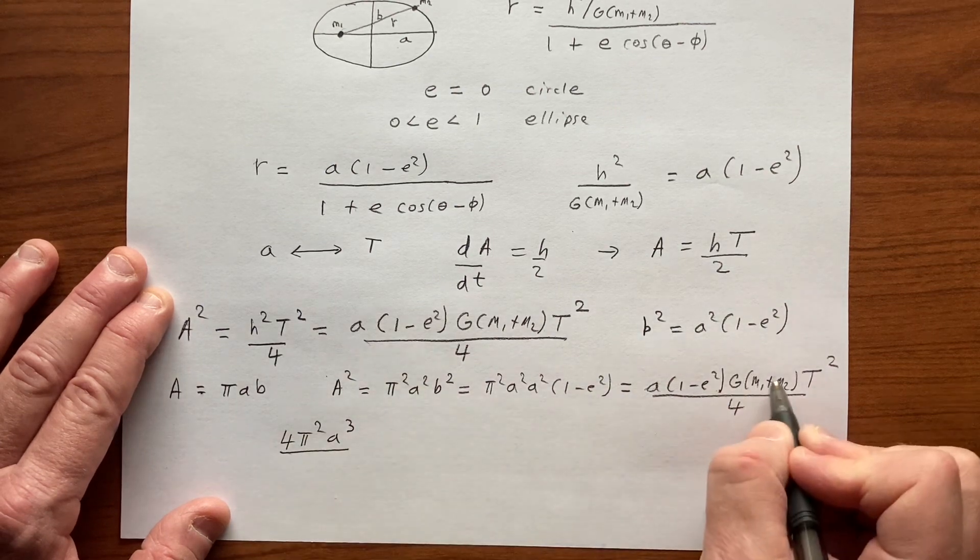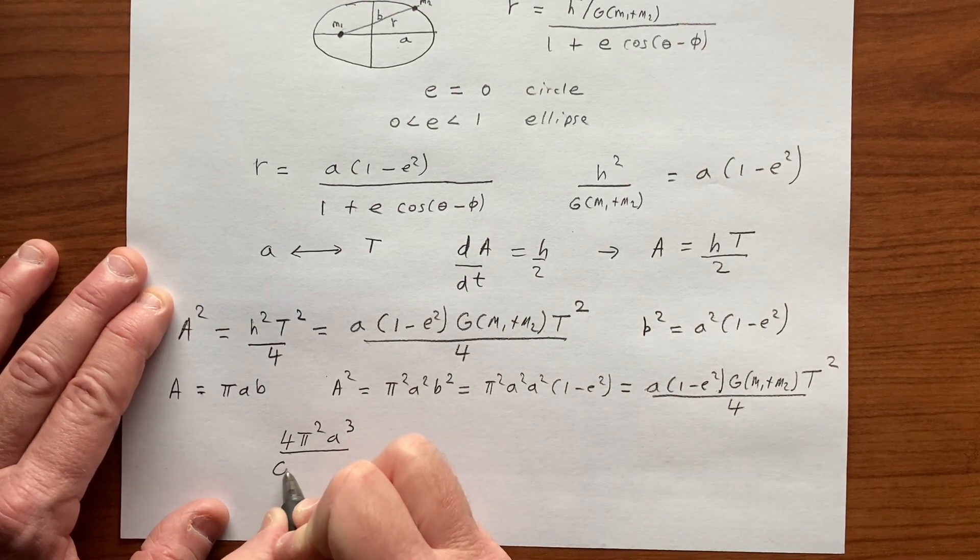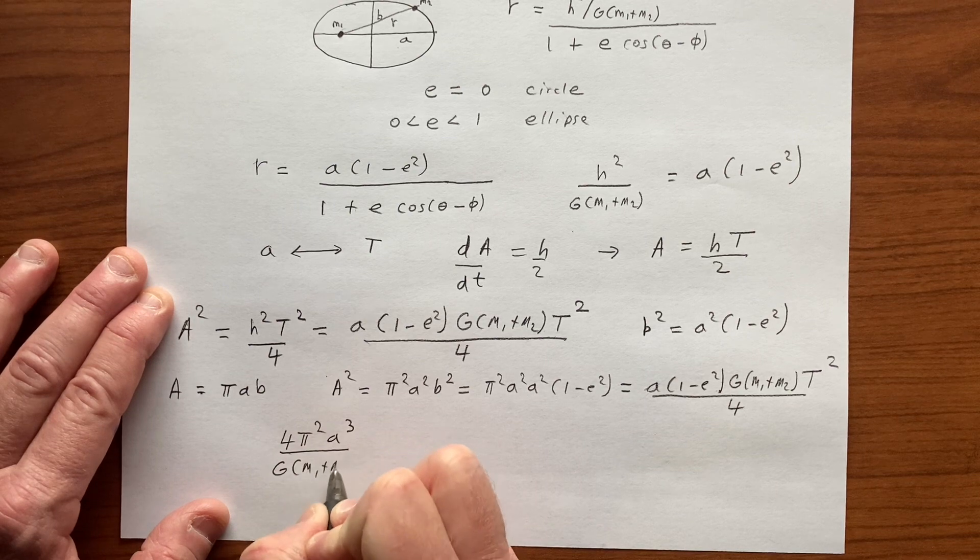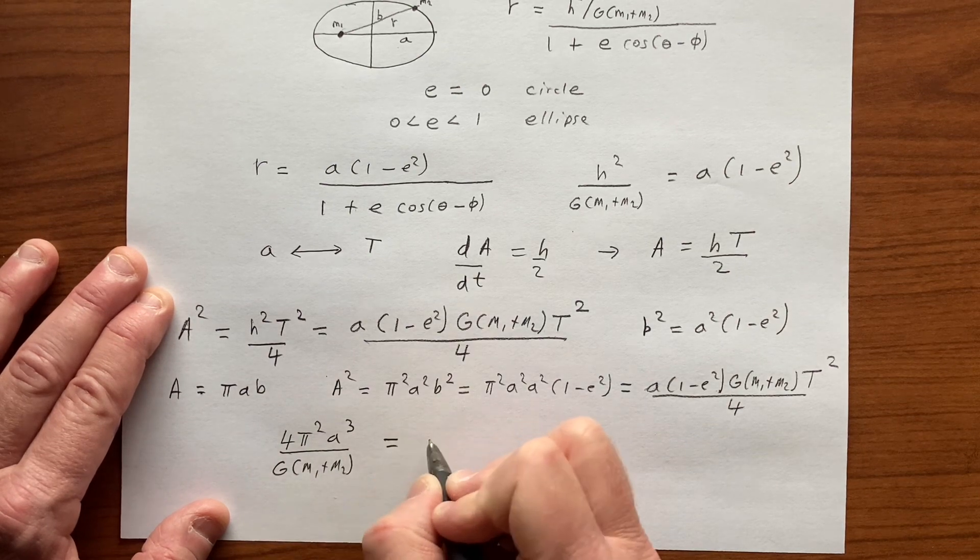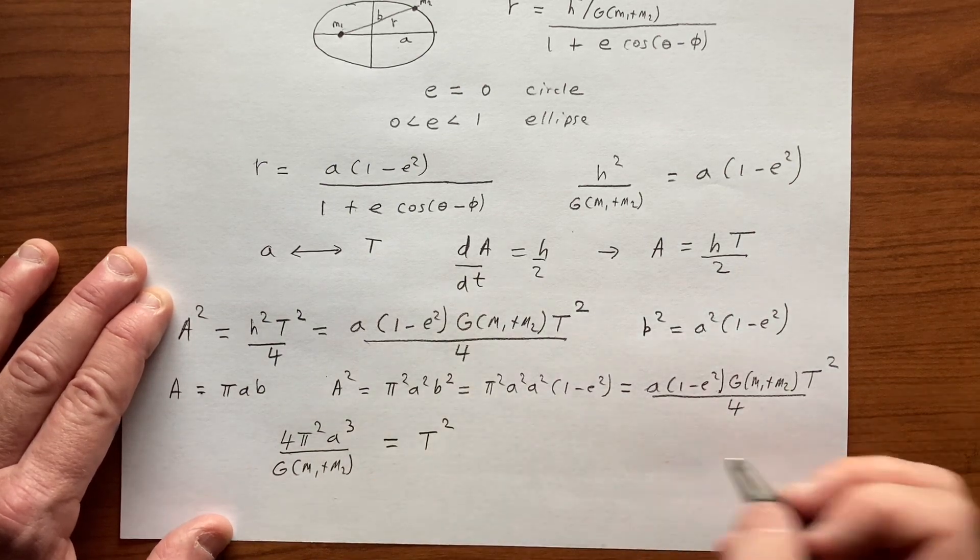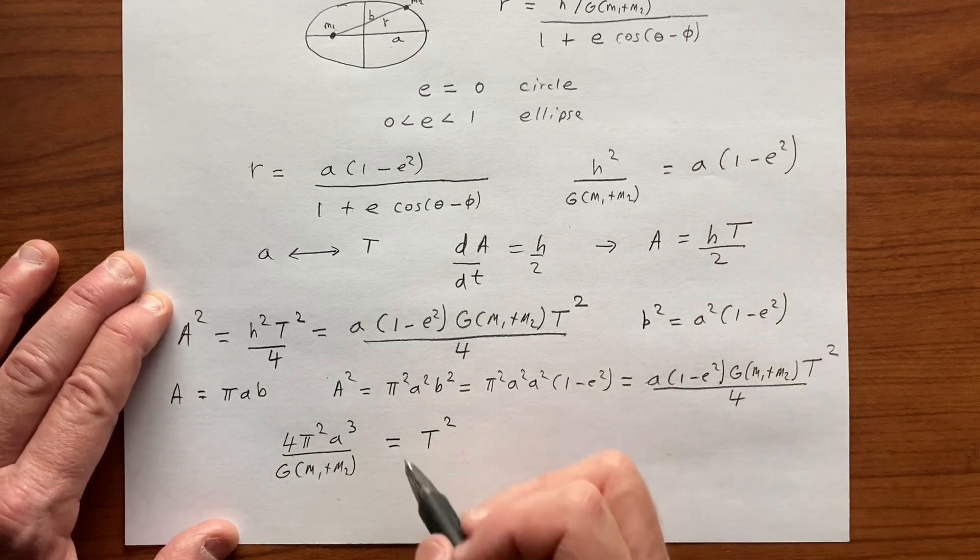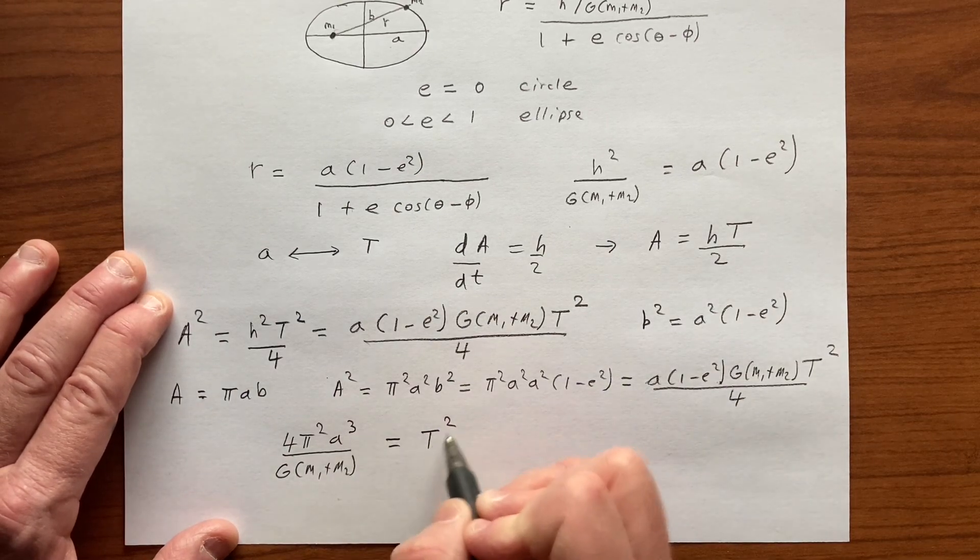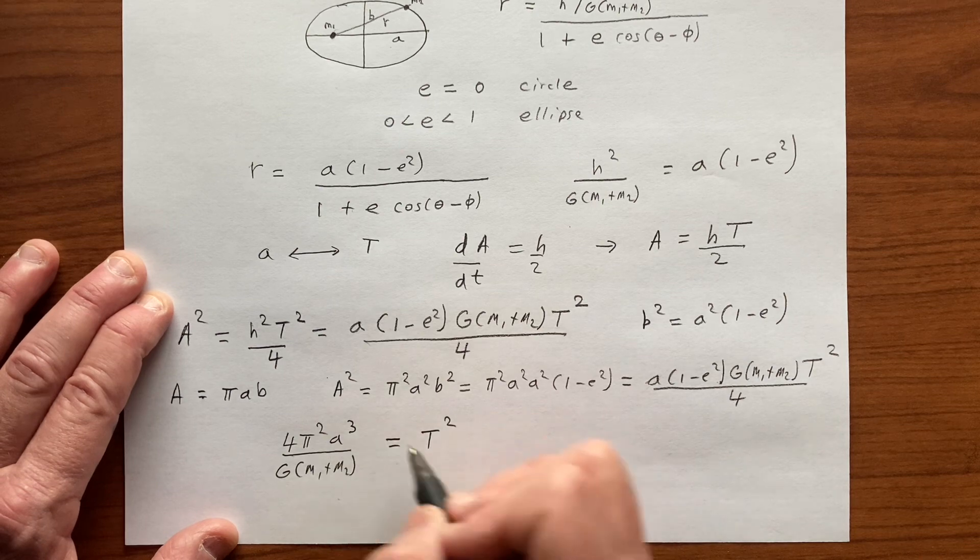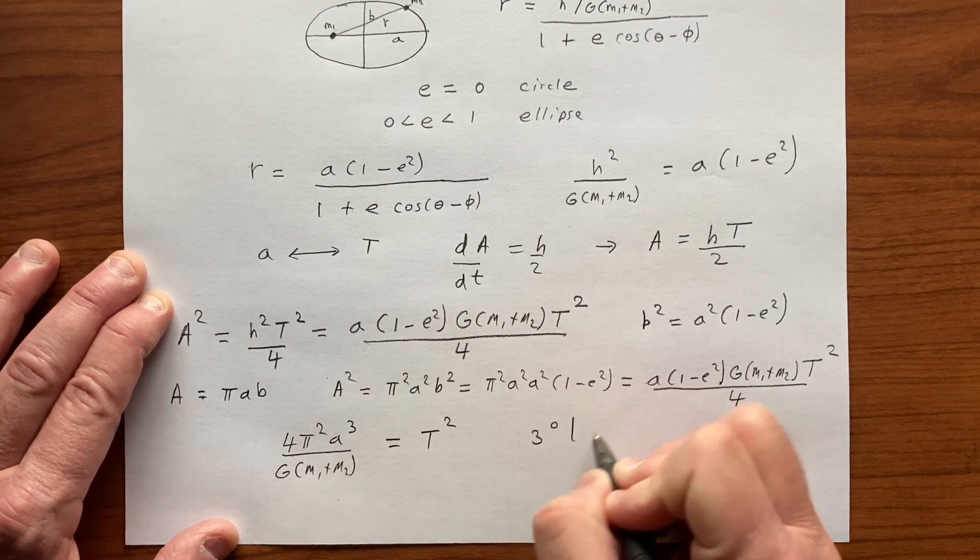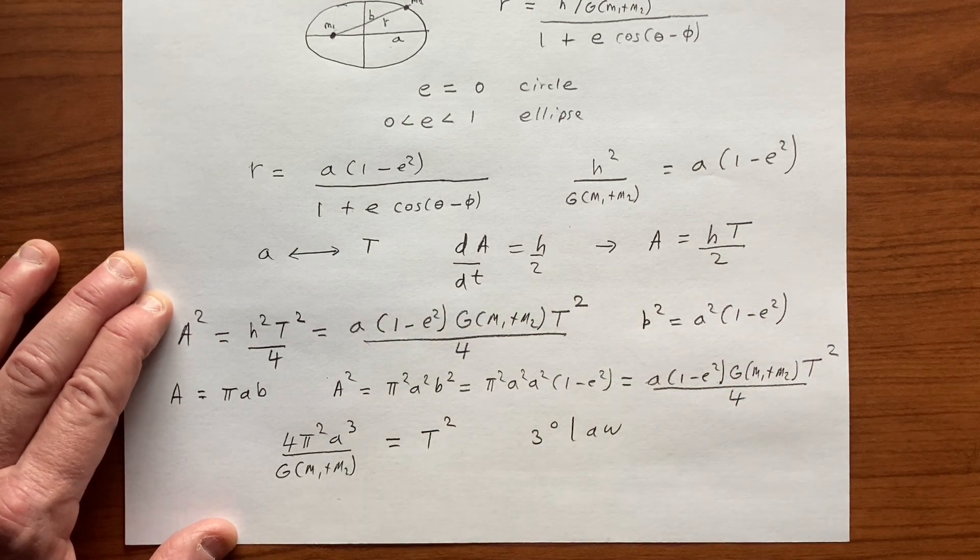Let's bring this factor down, usually it's written on this side, G(M1 plus M2), that is equal to T squared, and so it's telling us that the semi-major axis is related to the period of the orbit in this way. This is the third law of Kepler.